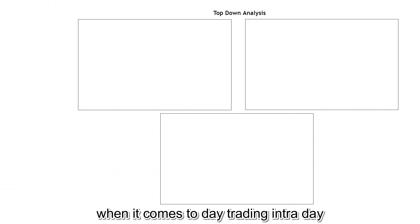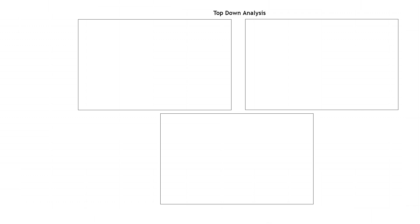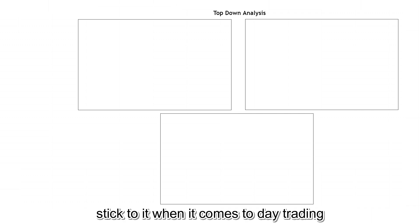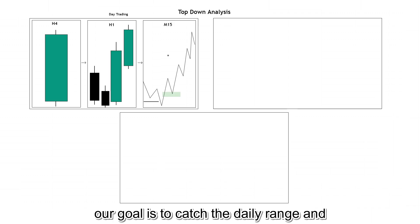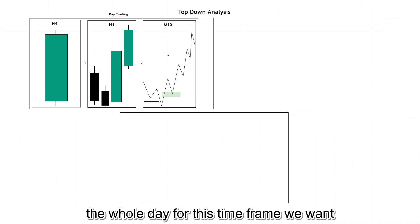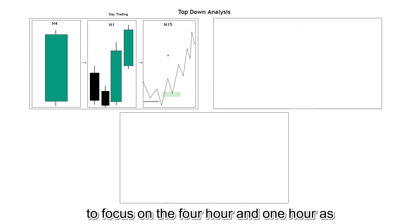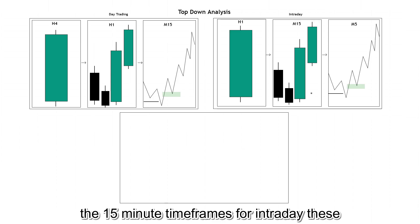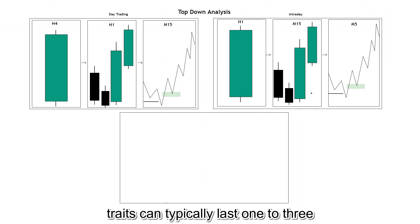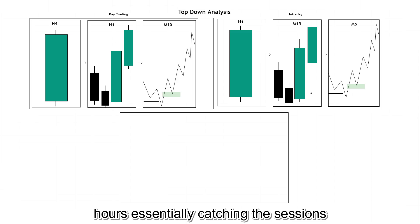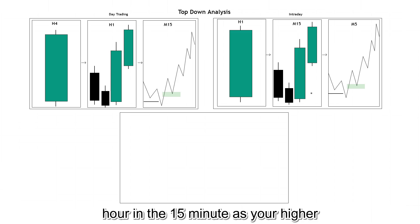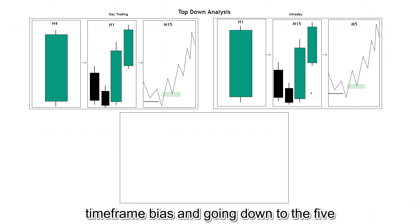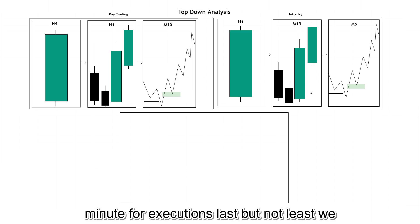I'm going to break down the specific timeframes to look at when it comes to day trading, intraday trading, and scalping — identify what suits you as a trader and stick to it. For day trading, our goal is to catch the daily range, and trades can typically last a couple hours or the whole day. Focus on the 4-hour and 1-hour as your higher timeframe bias, executing on the 15-minute timeframe. For intraday, trades can last 1-3 hours, essentially catching the session's range — focus on the 1-hour and 15-minute for bias, going down to the 5-minute for executions.